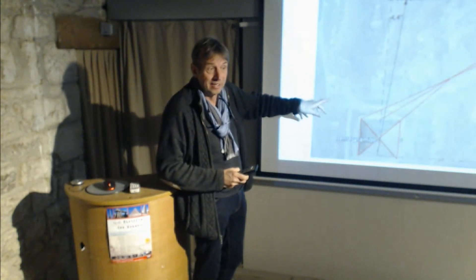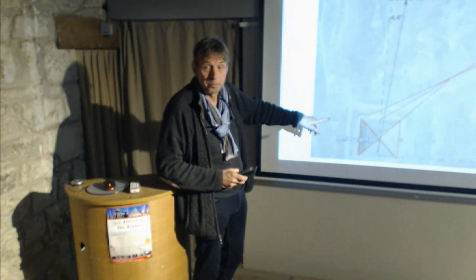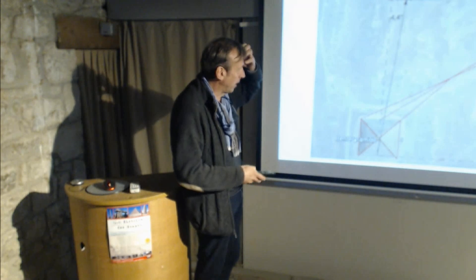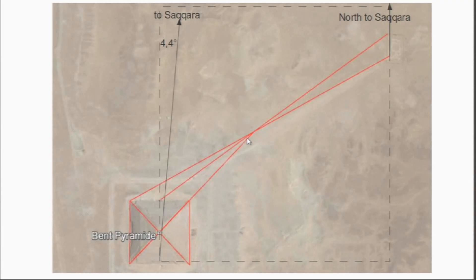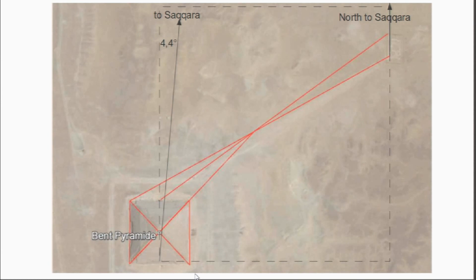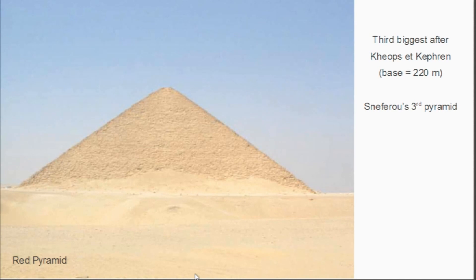This geometry all works perfectly. You can quite clearly see that the point where it changes direction is the projection of the diagonal. It's all worked out. Basically, what I want to show you is how the bent pyramid is related to Saqqara by a 1 by 13 relationship.